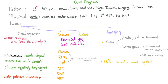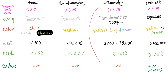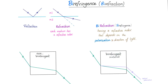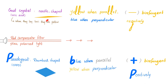The diagnosis of gout requires arthrocentesis with joint fluid analysis. For arthrocentesis to be diagnostic, you need at least one intracellular monosodium urate crystal — meaning inside the neutrophils — or more than or equal to three extracellular monosodium urate crystals in the joint. Gouty crystals, also known as monosodium urate crystals, are negatively birefringent and needle-shaped.